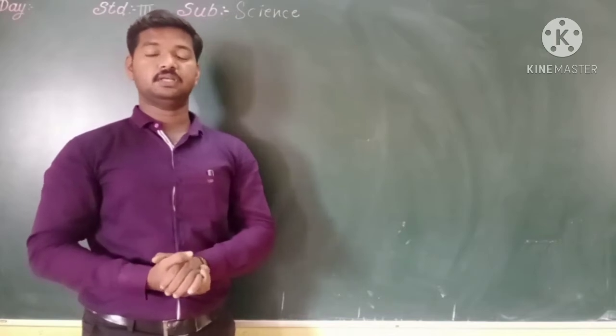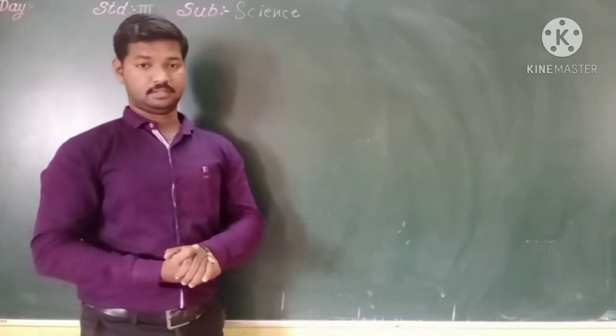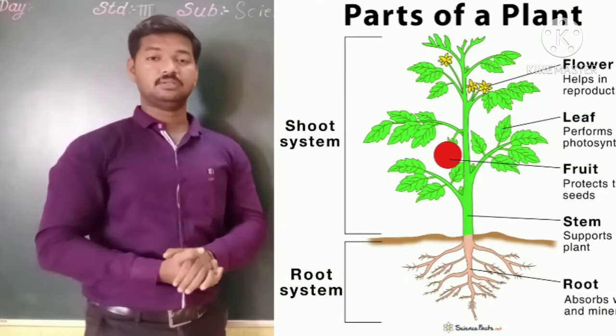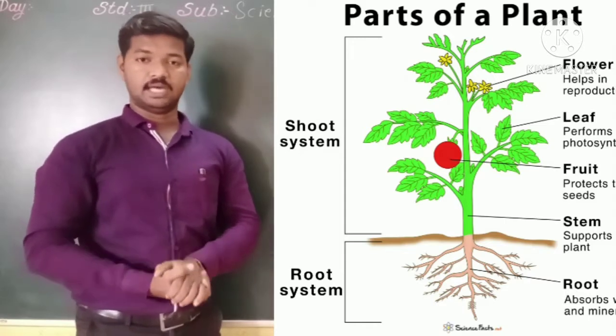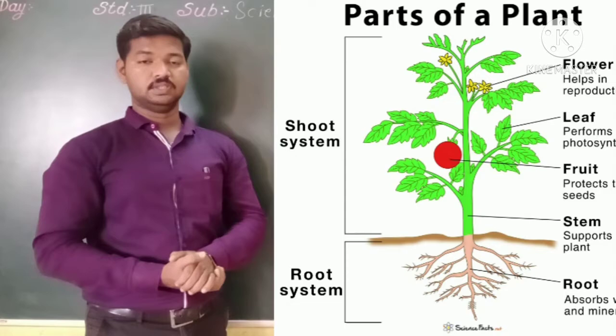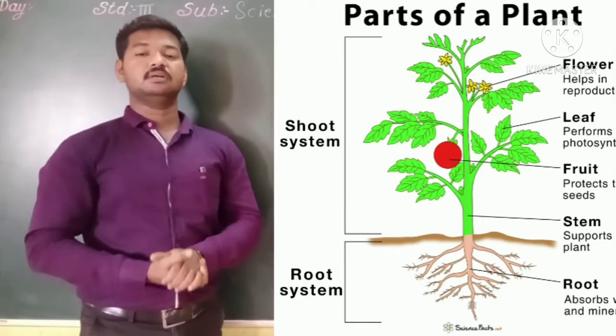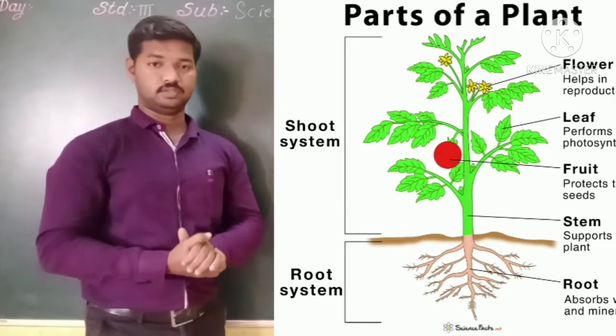In today's period we are going to learn about the next part of the plant that is shoot. The part of plant which lives above the ground is known as shoot. Shoot has stem, branches, buds, flowers, leaves and fruits.